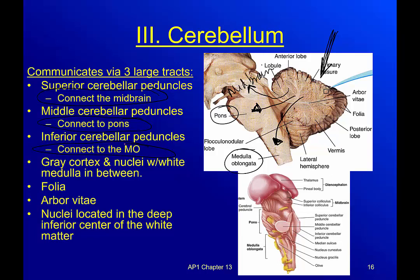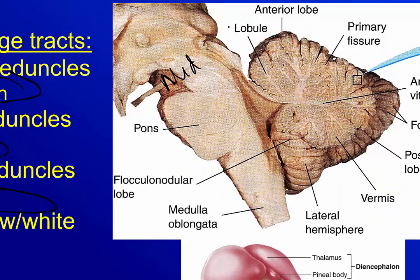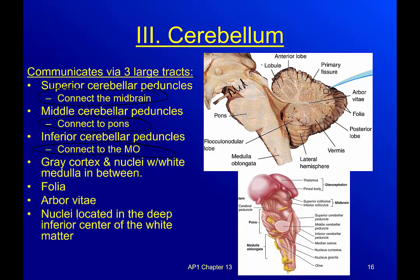Something interesting: the cerebellum has a gray cortex and a white medulla. Remember, medulla always means middle, cortex always means outside. Looking at this picture, the tree-looking piece in the middle is white matter, and the outside — the leaves of that tree — is the gray matter. Those folds on the outside are called folia, and that center piece that looks like a tree is called the arbor vitae.